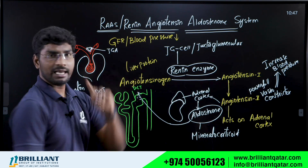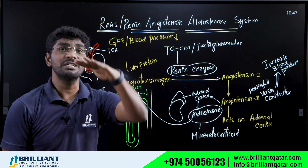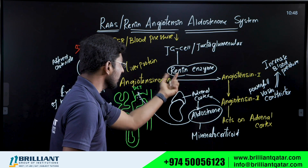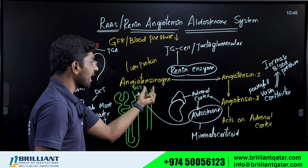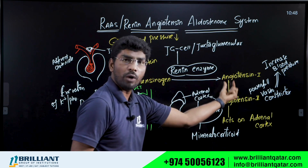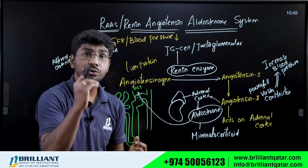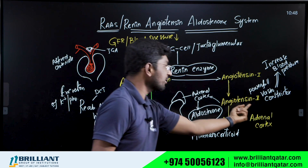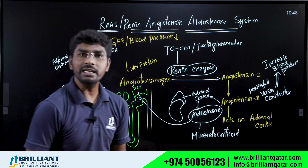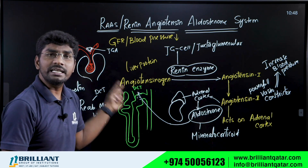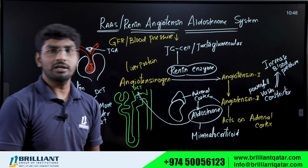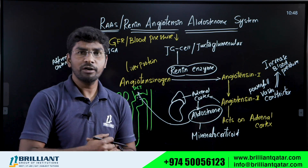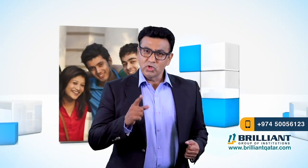In summary, the RAAS mechanism: when GFR and blood pressure decrease, the RAAS system turns on. Juxtaglomerular cells secrete the enzyme renin, which converts the liver protein angiotensinogen to Angiotensin 1, which is then converted to Angiotensin 2. Angiotensin 2 is a powerful vasoconstrictor that increases blood pressure, and also stimulates aldosterone to act on the DCT to balance minerals and water. That is how the RAAS system regulates kidney function.